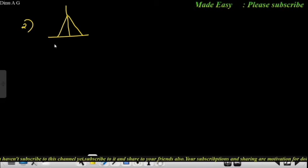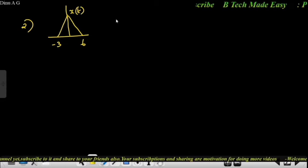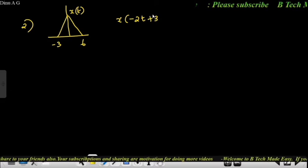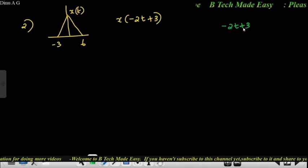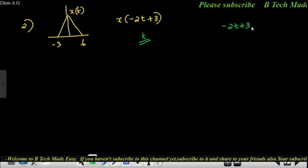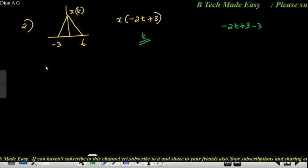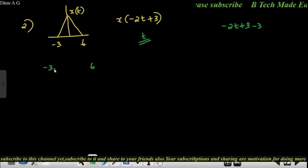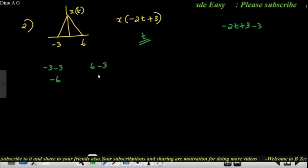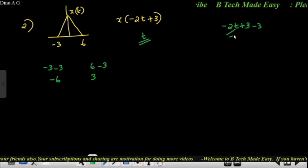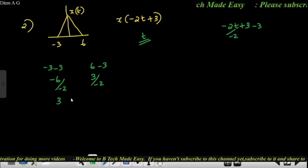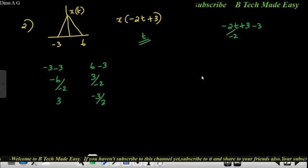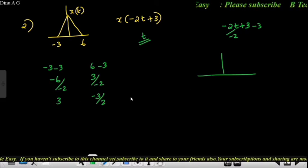Second question: the signal runs from minus 3 to 6. This is x of t. We need to draw x of minus 2t plus 3. Let's convert t. The lower limit equals minus 3. Now subtract: minus 3 gives minus 6, then divide by minus 2.